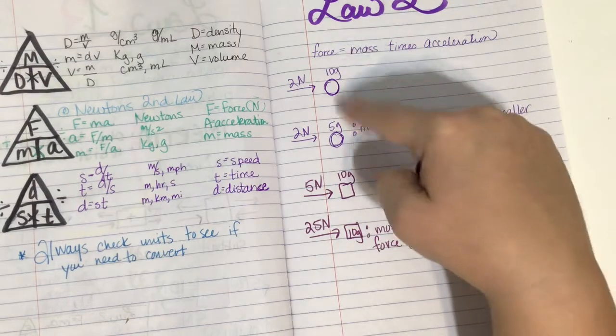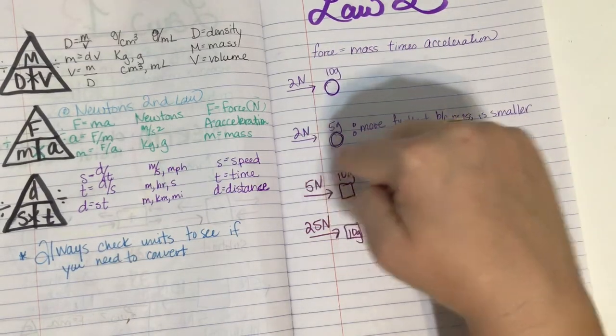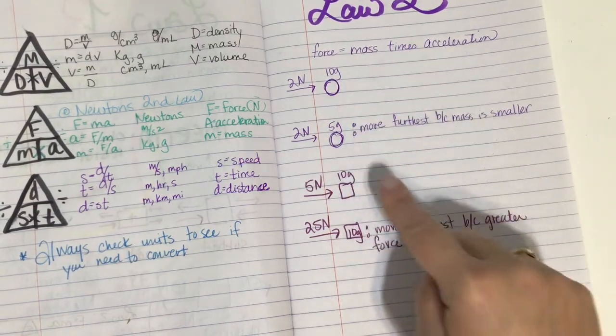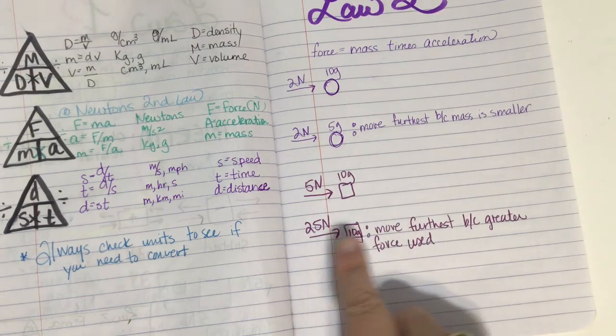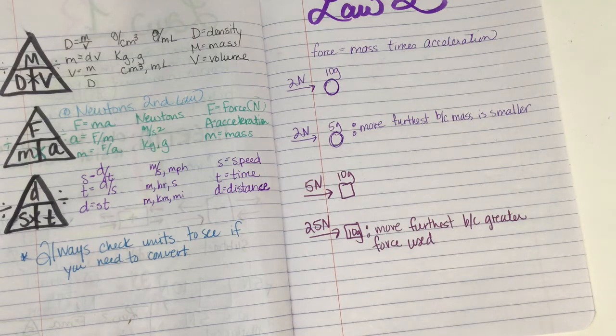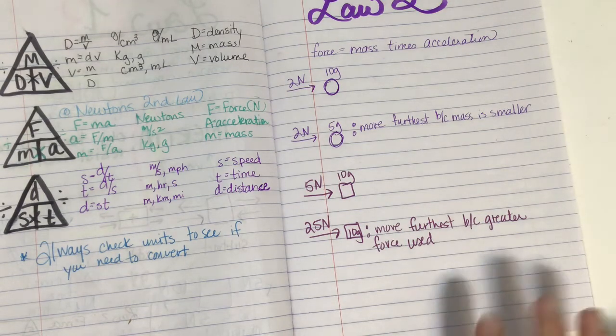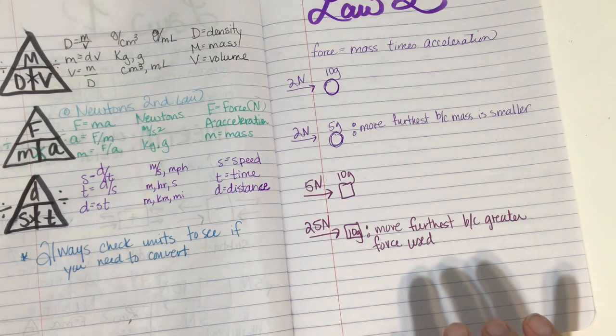So if my objects weigh different and the same force is used, the lighter one will move further. If my objects weigh the same and a greater force is used on one, the one with a greater force will have the most motion. So that kind of sums up what you need to know for law two.